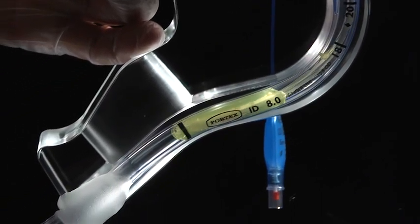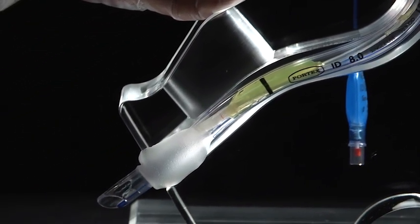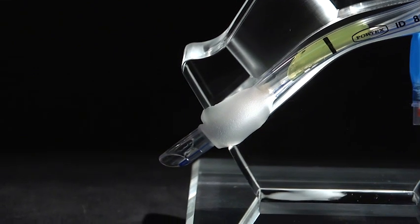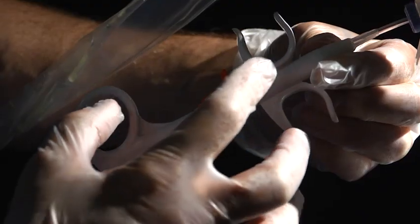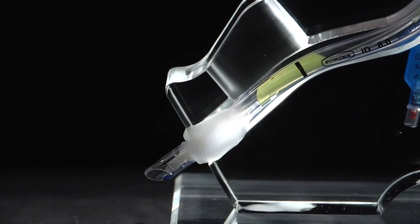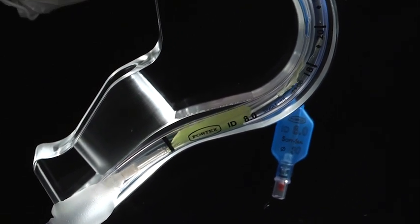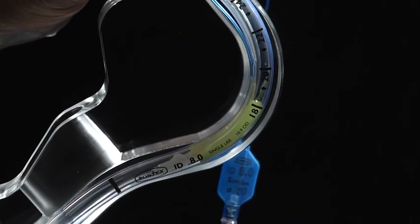Notice how the device passes through the mobile secretions and does not push them out the end of the endotracheal tube. The Endoclear device is deployed and pulled back into the BCA adapter, where contents can be disposed of or cultured.